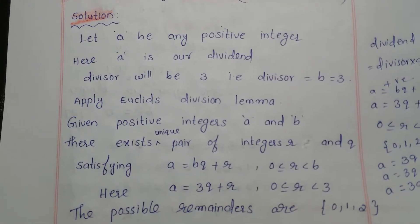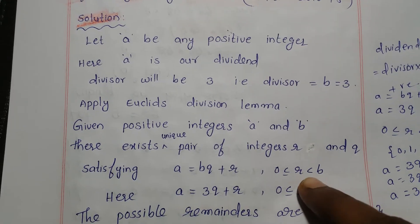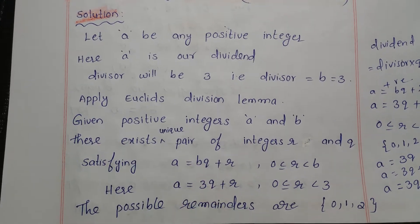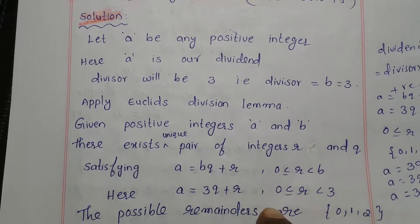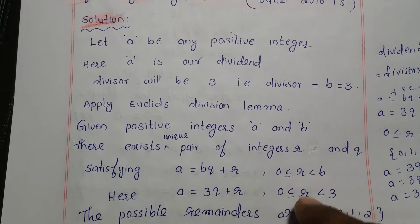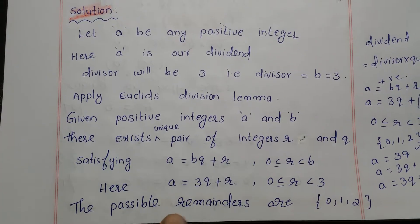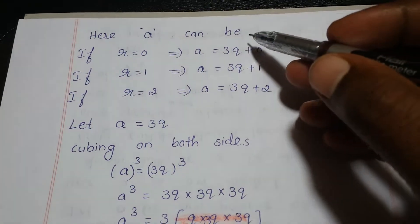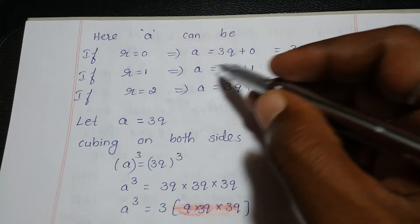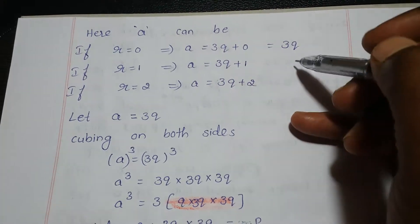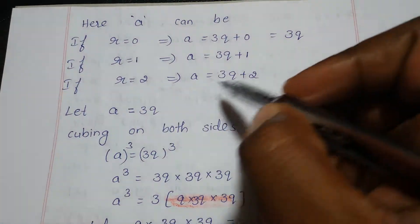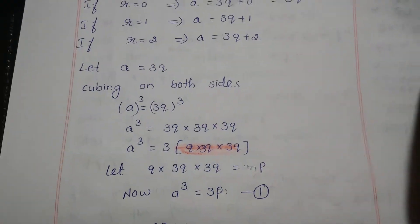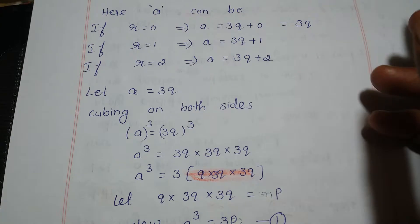From Euclid's division lemma, a equals bq plus r where 0 is less than or equal to r less than b. Our divisor is 3, so a equals 3q plus r. The possible remainders are 0, 1, and 2. So our three dividend forms are: if r is 0, a equals 3q; if r is 1, a equals 3q plus 1; if r is 2, a equals 3q plus 2.